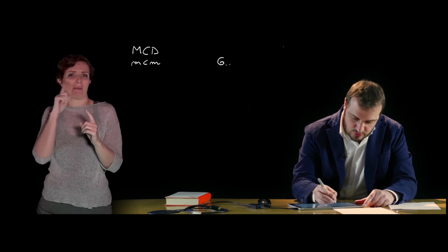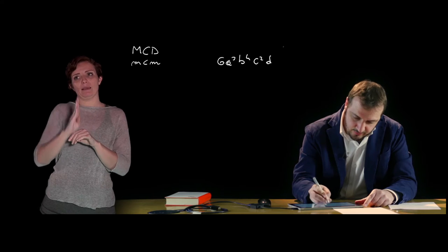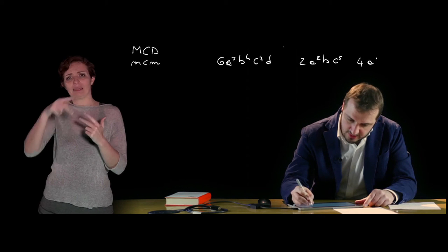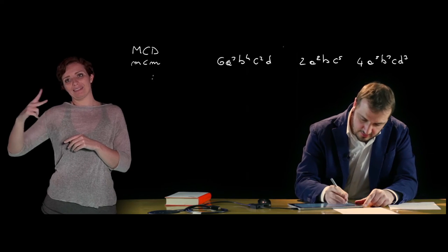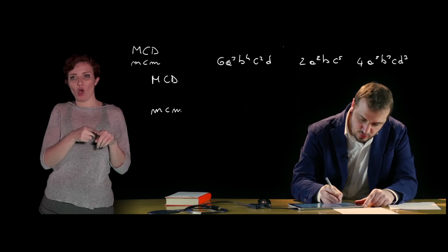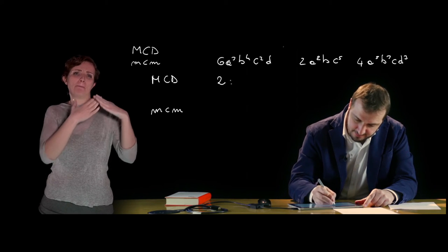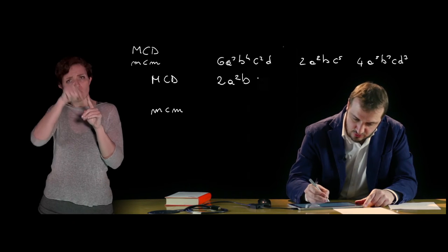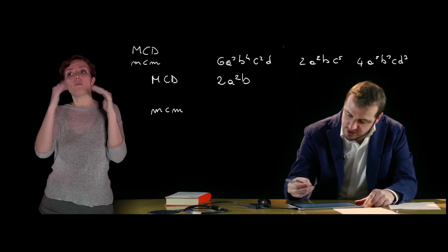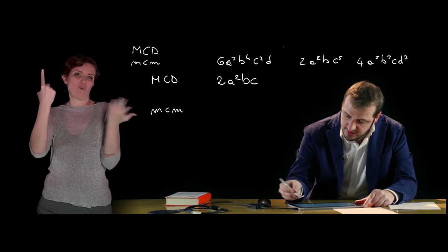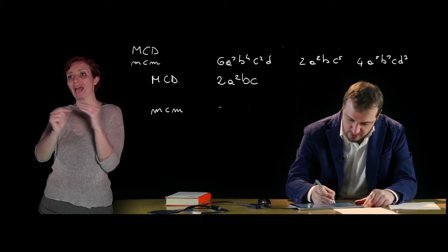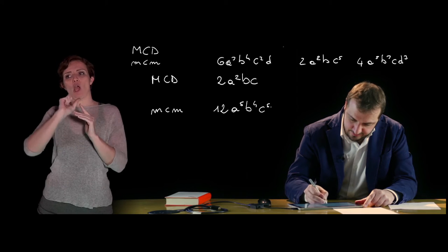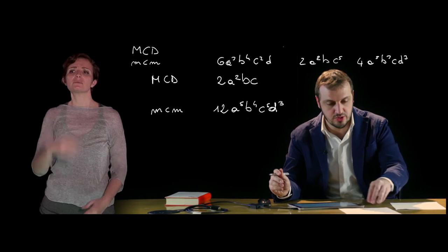Facciamo un esempio: abbiamo 6a alla terza, b alla quarta, c alla seconda, d come primo monomio; il secondo monomio è 2a alla seconda, b, c alla quinta; e il terzo 4a alla quinta, b alla terza, c, d alla terza. Per il massimo comun divisore sarà evidentemente 2a alla seconda, presente in tutti i termini con grado più basso al secondo; b presente in tutti i termini con grado più basso al primo; c presente in tutti i termini con grado più basso ancora 1; d non è presente in tutti i termini quindi non fa parte del MCD. Il minimo comune multiplo avrà 12 come coefficiente e poi tutte le lettere con il loro massimo esponente.